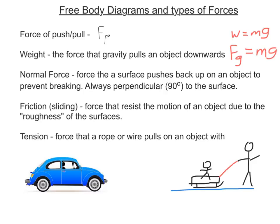Normal force is the force that a surface pushes back up on an object to prevent it from breaking through. Using the car as an example, I've labeled the force of the engine going forward — you could write Fp for force of push-pull, or label it more specifically with a subscript E for force of engine — and I've included the force of gravity going down. Normal force is what causes the car to stay on the road. If there's no force going up, the force of gravity would cause the car to accelerate downwards.